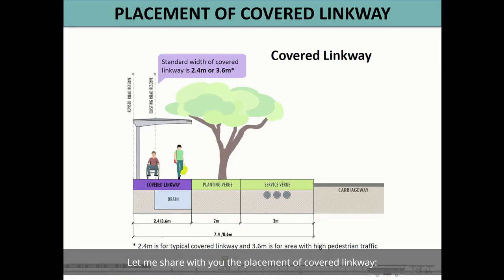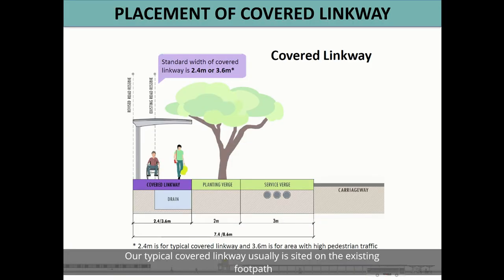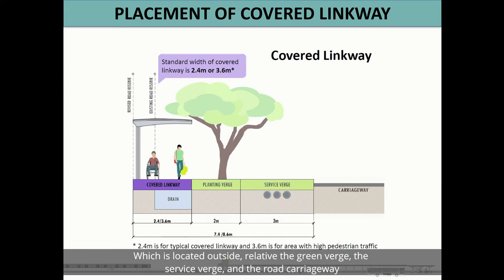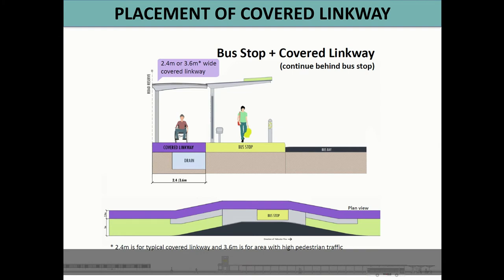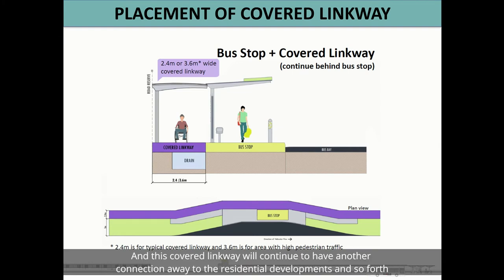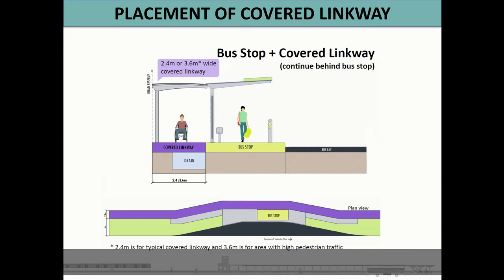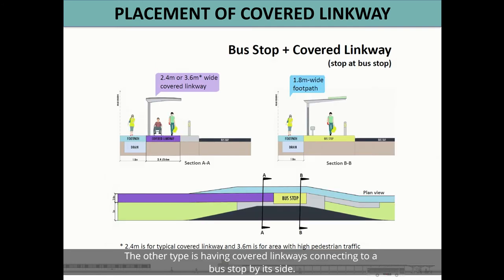Let me share with you the placement of covered Linkway. Our typical covered Linkway is usually sited on the existing footpath, then the green verge and service verge, then the carriageway. For placement of covered Linkway near bus stops, there are two scenarios. The first scenario is where the Linkway goes behind the bus stop, continuing to connect to residential developments and so forth. The other type is having the covered Linkway connecting to the bus stop by its side.